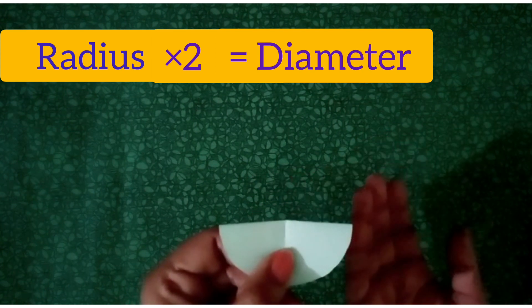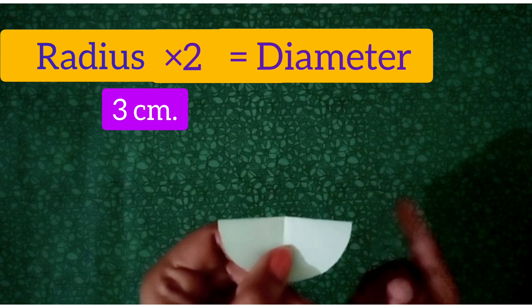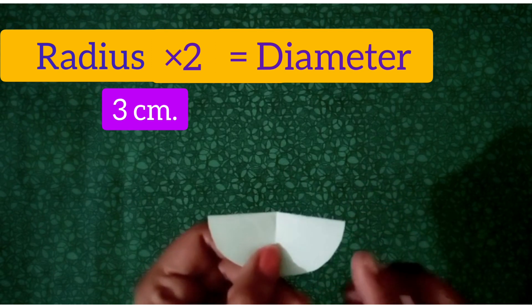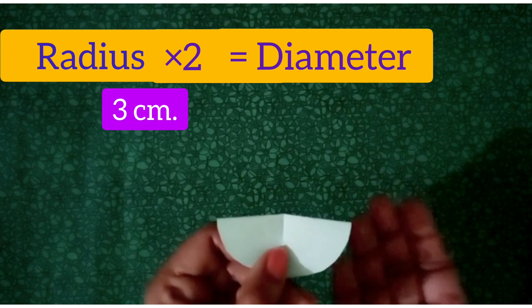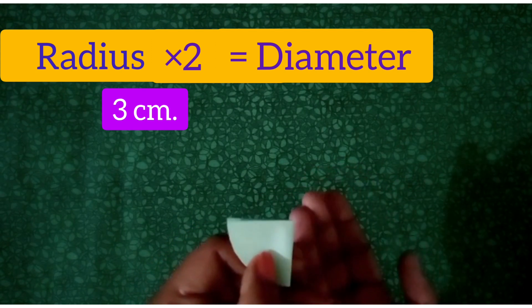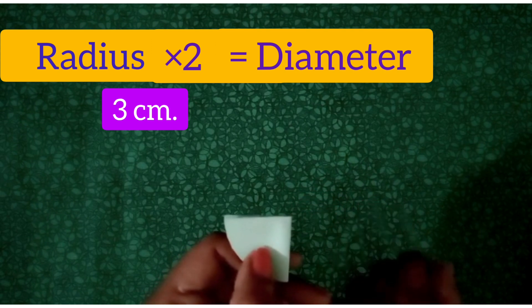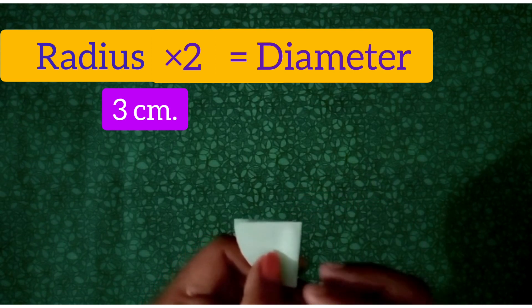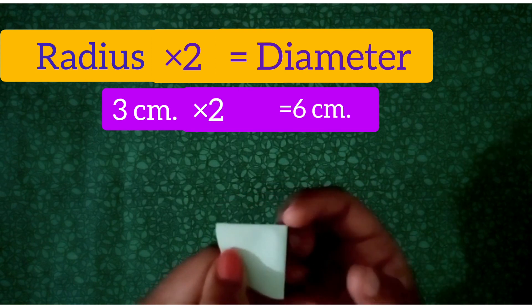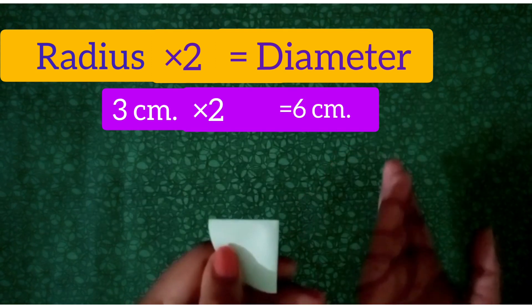If students, radius is 3 centimeter, then what will be the diameter? It will be 6 centimeter. It's 2 into 3 that is equal to 6 centimeter.